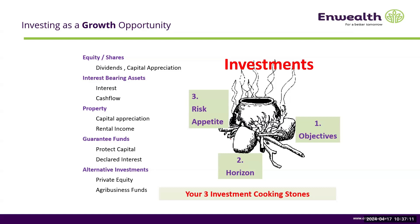You have to align when investing — align your objectives to how long you are going to invest, and all this will be appreciated in your investment policy guided by your investment objectives. For shares, you get capital appreciation and dividends. For interest-bearing assets, you get interest income and cash flow. For property, you get rental income and capital appreciation. You can also have guaranteed funds and equities and agri funds as well.